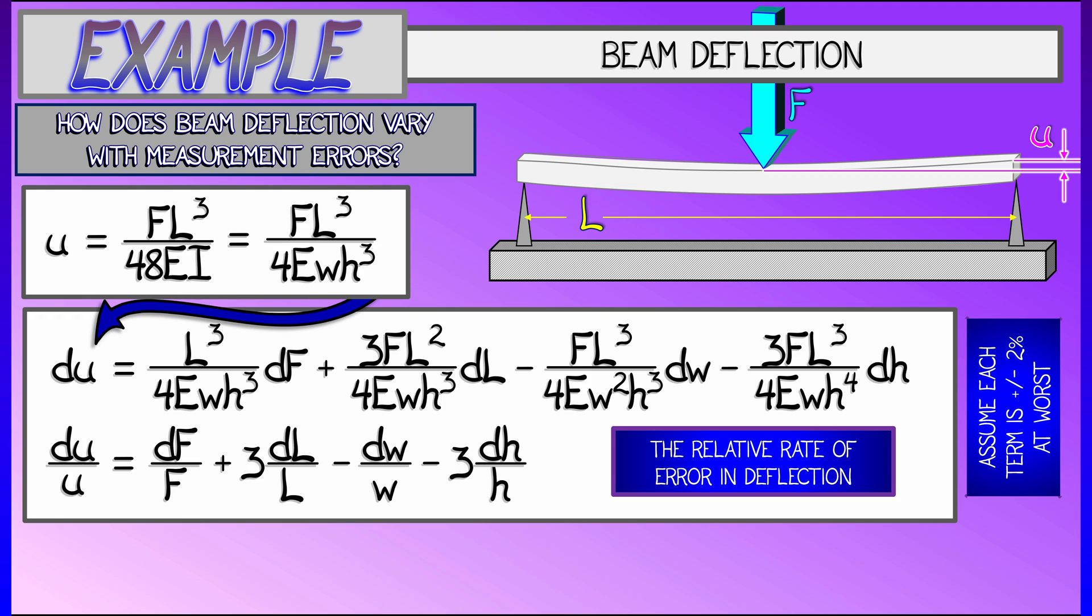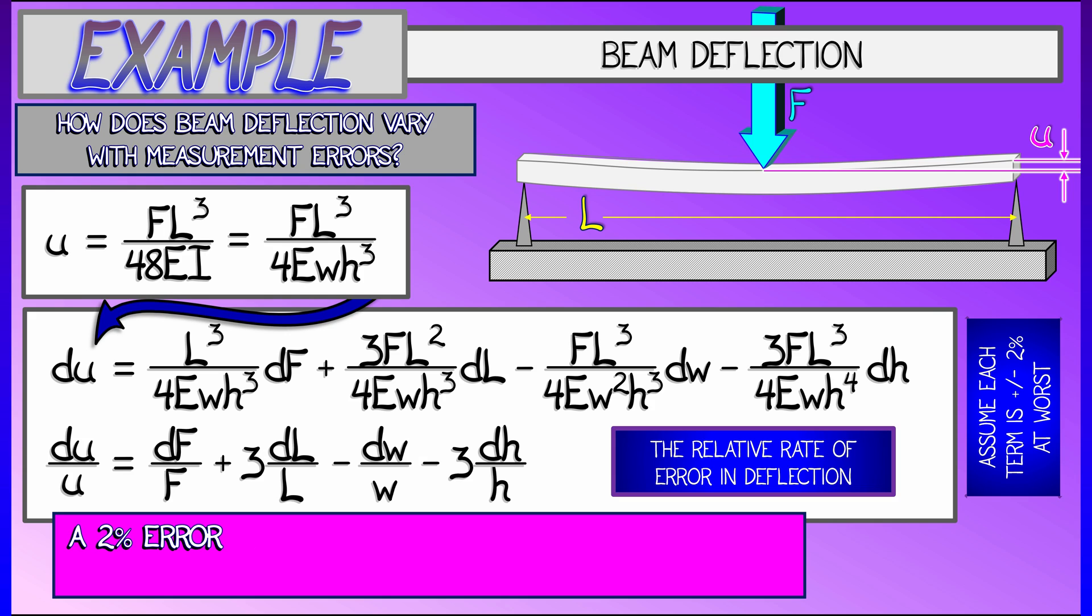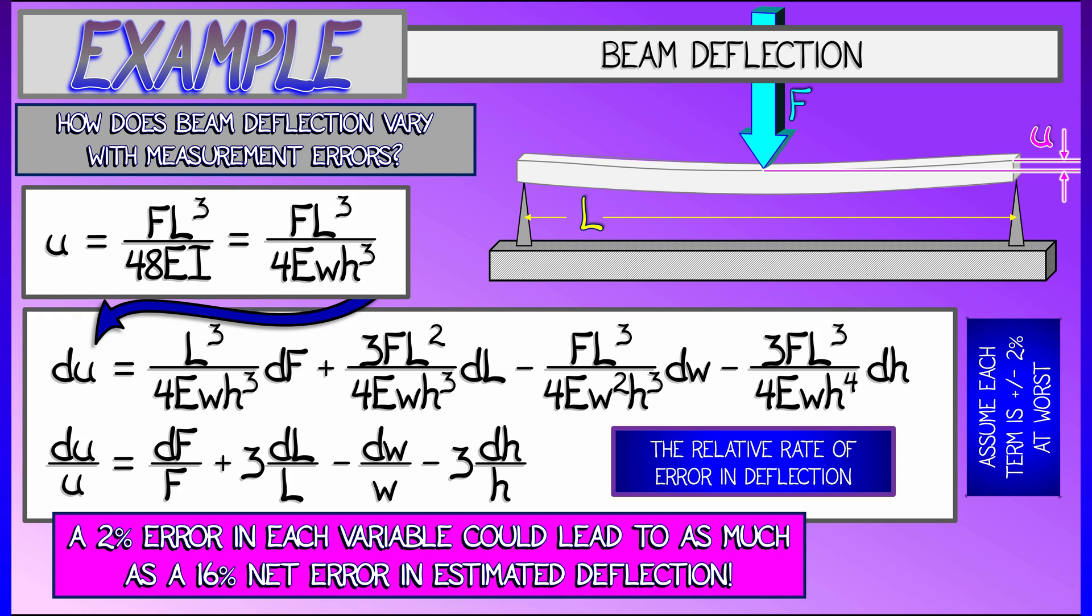And what this means is that if we have a 2% error plus or minus on each of these variables, the d f over f, the d l over l, et cetera, is 2%. Then what that means is that du over u is at worst at most 16%. That's 2 plus 3 times 2 minus negative 2 minus 3 times negative 2. That's exactly how much you can vary. It can be at worst 16%.